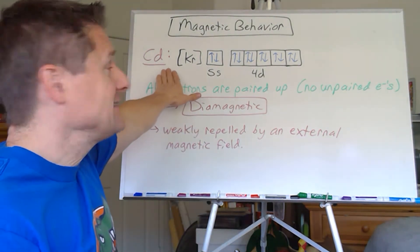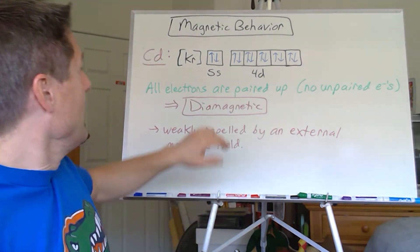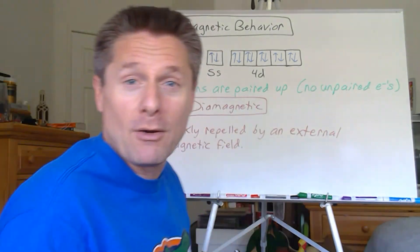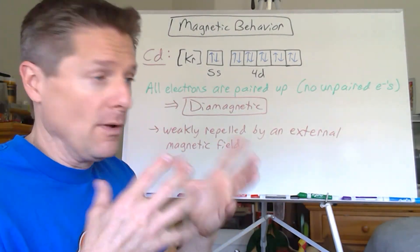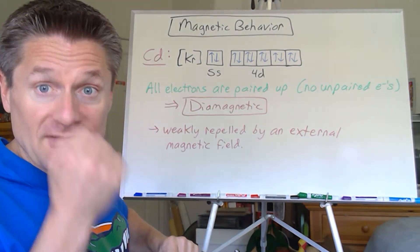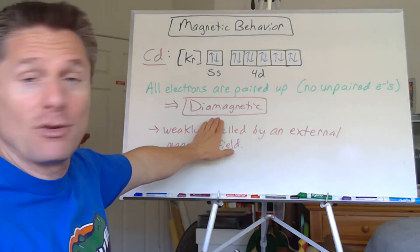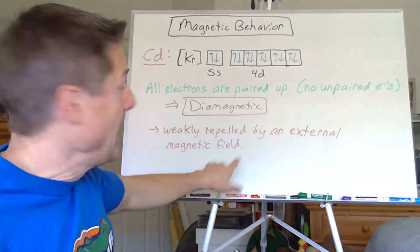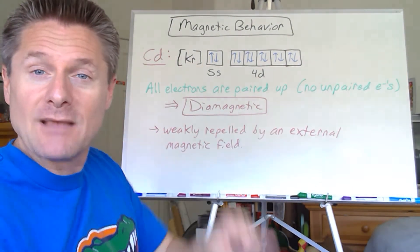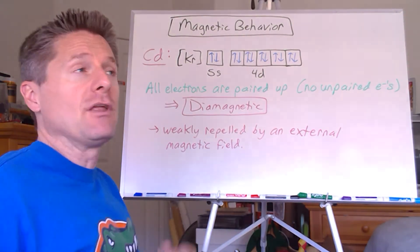Let's take a look at cadmium. We've got its electron configuration. It's pretty obvious all the electrons are paired up. There are no unpaired electrons. That means there's no remaining induced magnetic field from spinning electrons. Therefore, if I put this in an external magnetic field, it will be diamagnetic and weakly repelled.